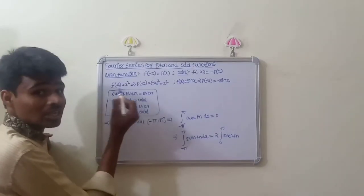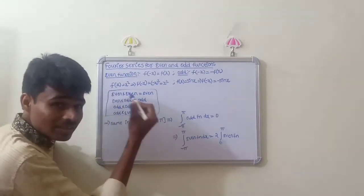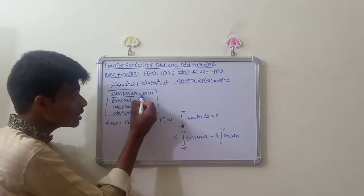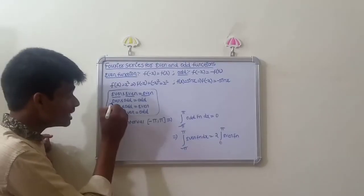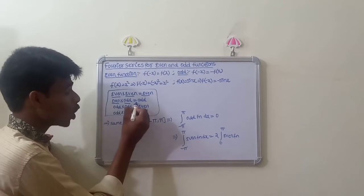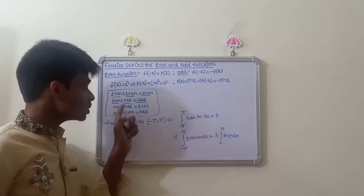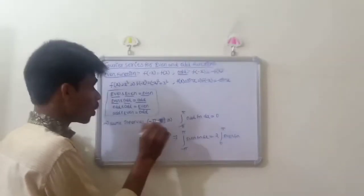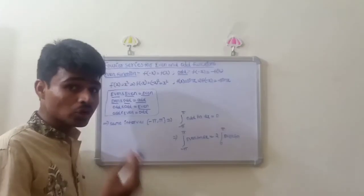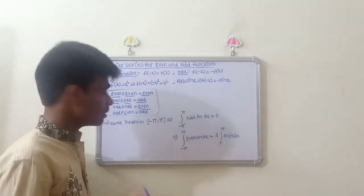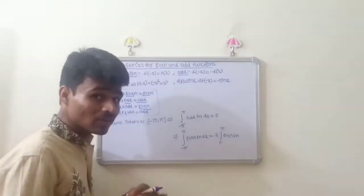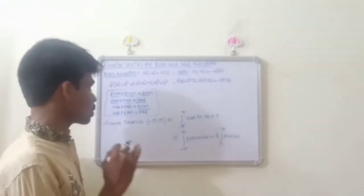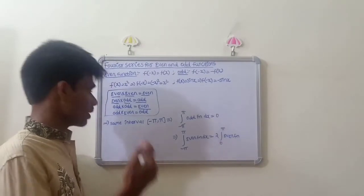These are the product rules: even function times even function gives even function. Odd function times odd function gives even function. Even function times odd function gives odd function. These four formulas are important.